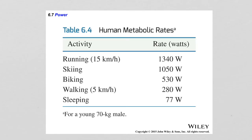Here is a table of examples of power generated during certain activities for a young 70-kilogram male: running at 15 km/h generates 1,340 watts; skiing generates 1,050 watts; biking 530 watts; walking at 5 km/h generates 280 watts; and sleeping generates 77 watts.